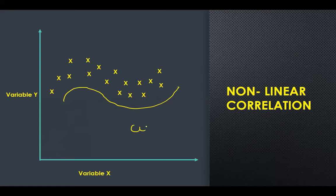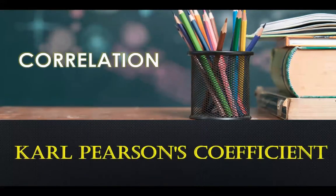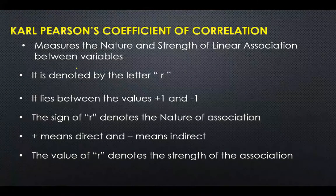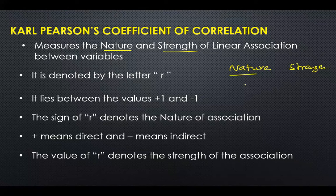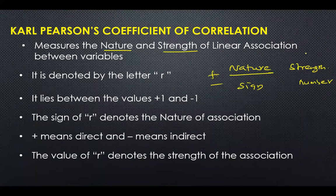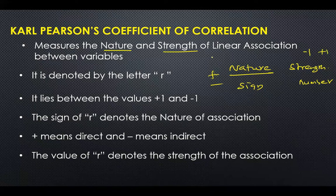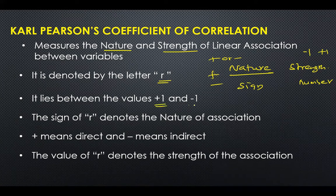Now we study Pearson's coefficient of correlation — this will be covered in detail in a separate video for calculation. Pearson's coefficient measures two things: the nature and the strength of the relationship. Nature is denoted by the sign (plus or minus), and strength is denoted by the number. The value always lies between minus one and plus one, and it is denoted by the letter r.